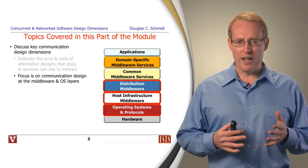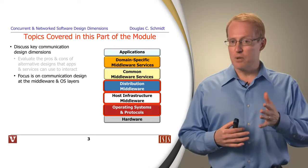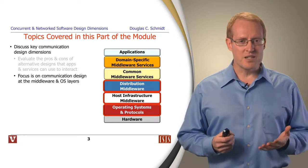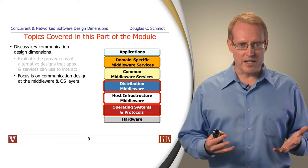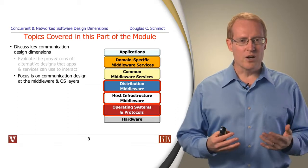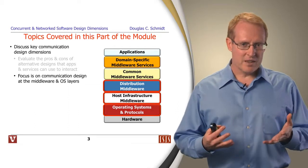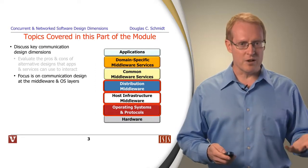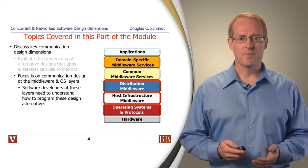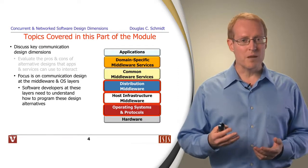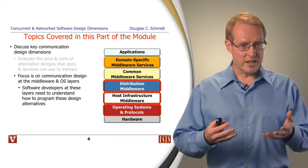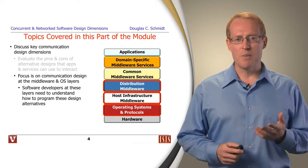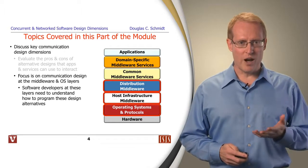We're going to be focusing on communication design at the middleware and operating system layers. The main reason for doing this is this is where some of the most interesting design dimensions occur and where people have the biggest opportunity to optimize the software so it will work effectively for the upper layer services and applications. If you are developing software or using software at this level, knowledge of these design dimensions will make you a more effective programmer and architect.